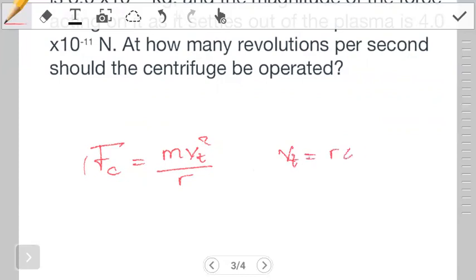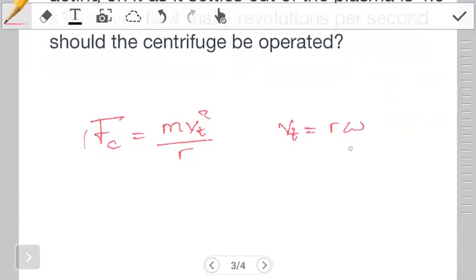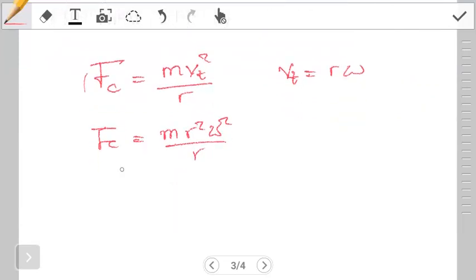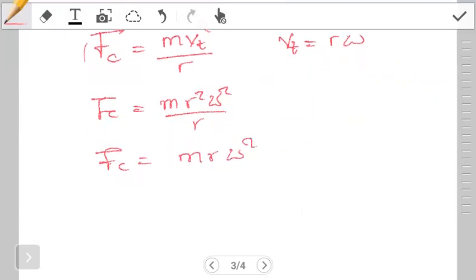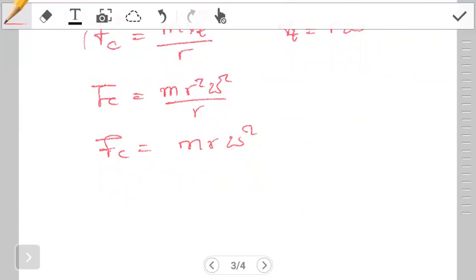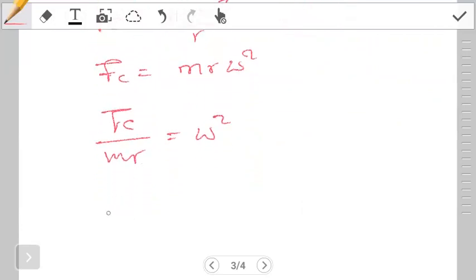We can substitute this in our equation. Now we have Fc equals m r squared omega squared over r, and you can easily see that this is Fc equals m r omega squared. From here we want omega, so we make it the subject of the formula. Divide both sides by mr, this becomes Fc over mr equals omega squared. Square root both sides, now we have the square root of Fc over mr, this is what gives us omega.